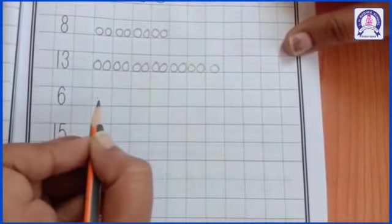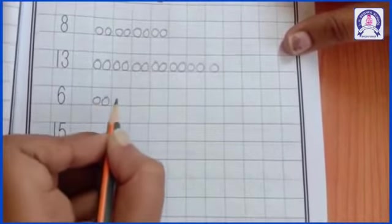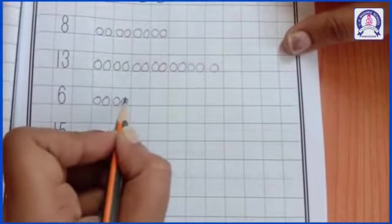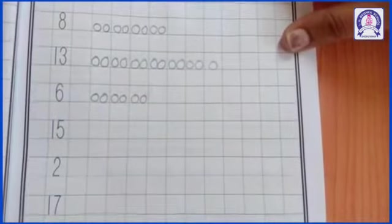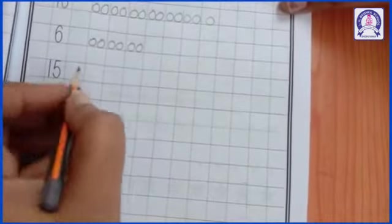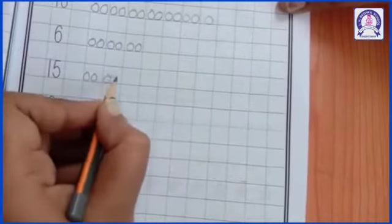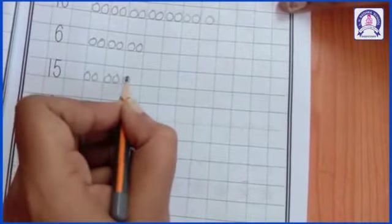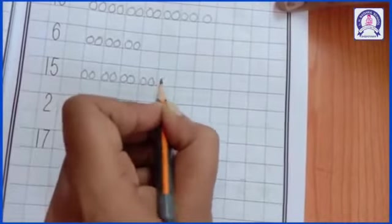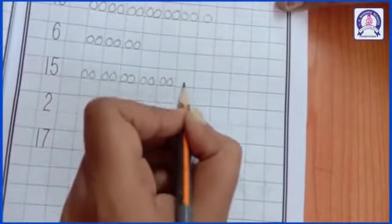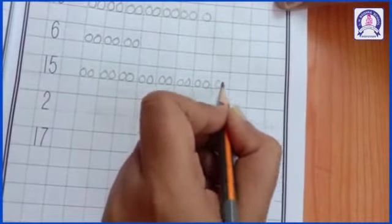Number 6. We have to make 6 circles. 1, 2, 3, 4, 5, 6. Then 15: 8, 9, 10, 11, 12, 13, 14, 15.